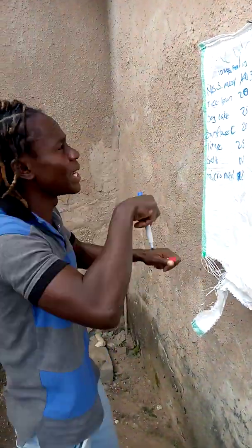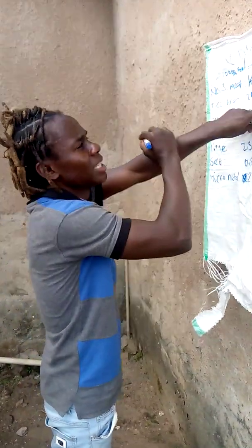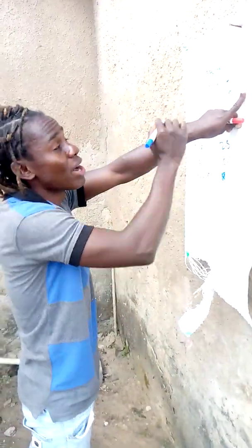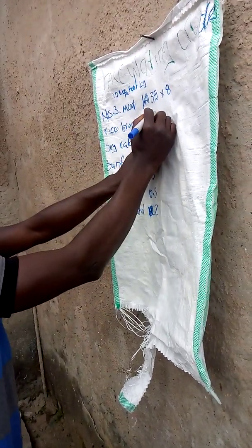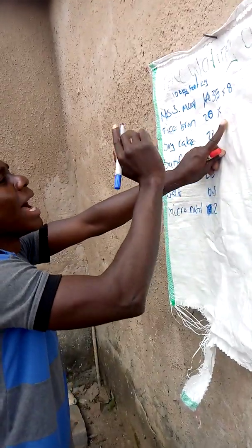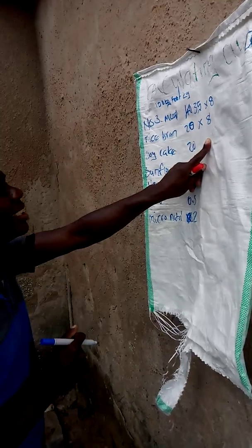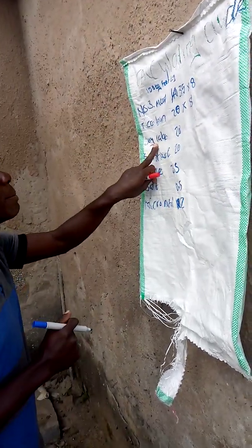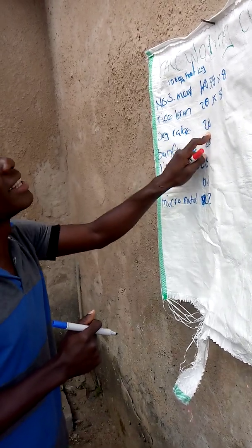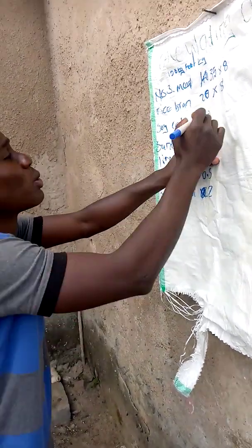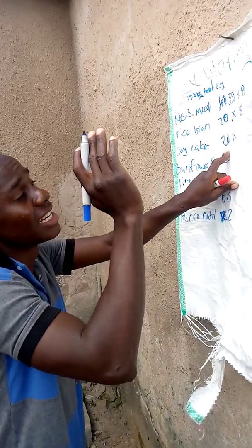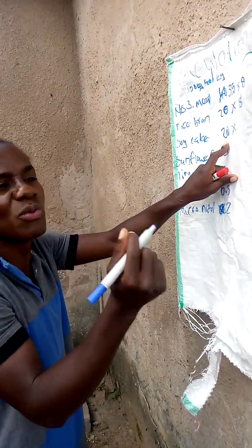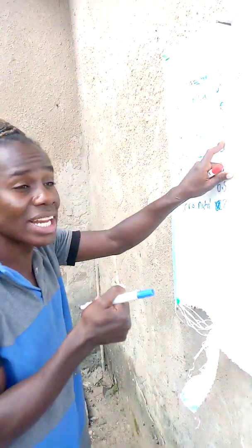Now I'll start doing my multiplication. The crude protein in number three meal is 8%, so I'll multiply 35 by 8. The crude protein in rice bran is also 8%, so I'll multiply 20 by 8. Then on the soya cake — I'll multiply that figure by 45, because soya cake has a crude protein of 45%. What I want to achieve is something between 15 to 20% crude protein.